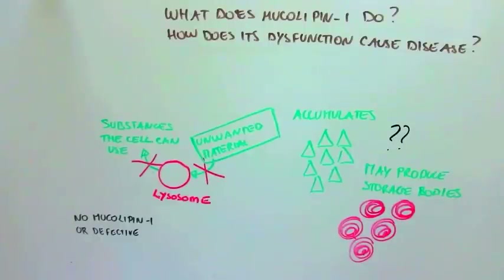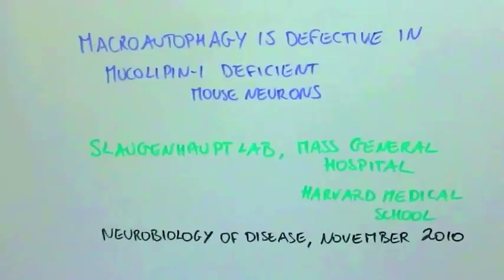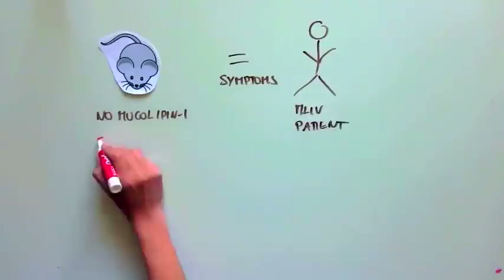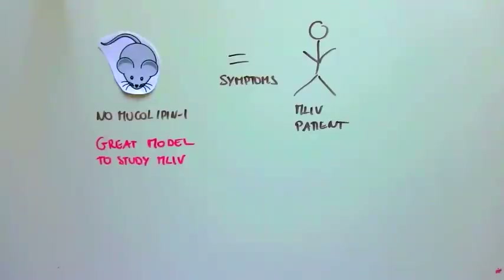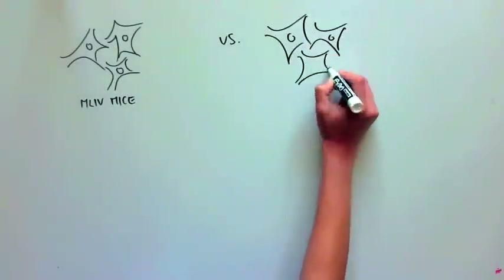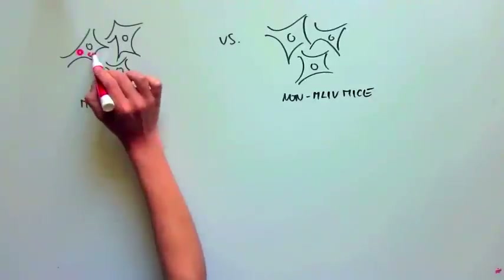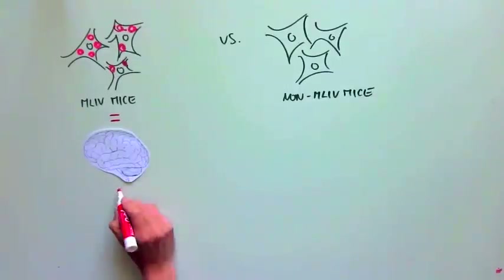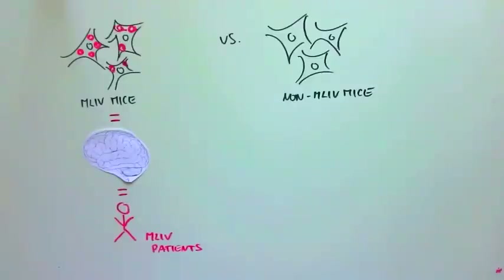That is exactly what the scientists of this paper wanted to examine, in an article titled "Macroautophagy is Defective in Mucolipin-1 Deficient Mouse Neurons," published by the Sloggenhop Lab at Massachusetts General Hospital and Harvard Medical School in November 2010 in Neurobiology of Disease. These scientists used a mouse model for ML4 where the mucolipin-1 DNA sequence and protein were removed. These mice have a lot of the same symptoms as ML4 patients, so it's a great model in which to study the disease. The scientists found the same types of storage bodies in neurons in a petri dish compared to a mouse brain, and those storage bodies are also very similar to storage bodies found in ML4 patients. So this was a great validation that the human ML4 disease was very well recapitulated in this cellular model.